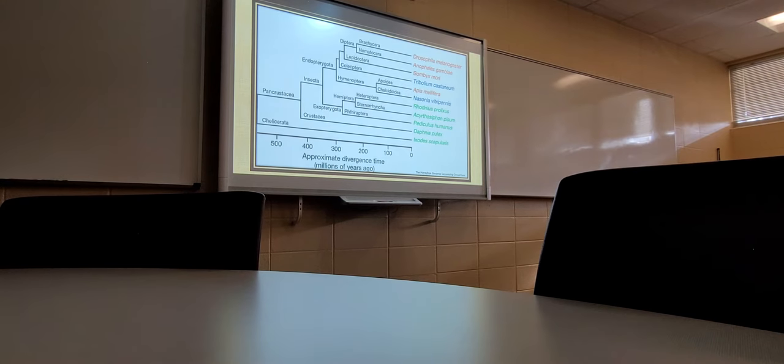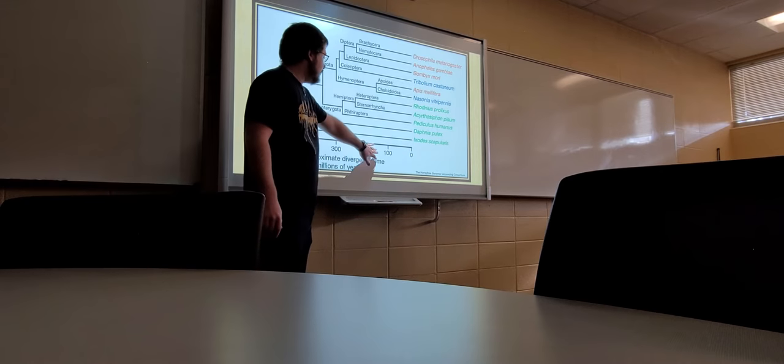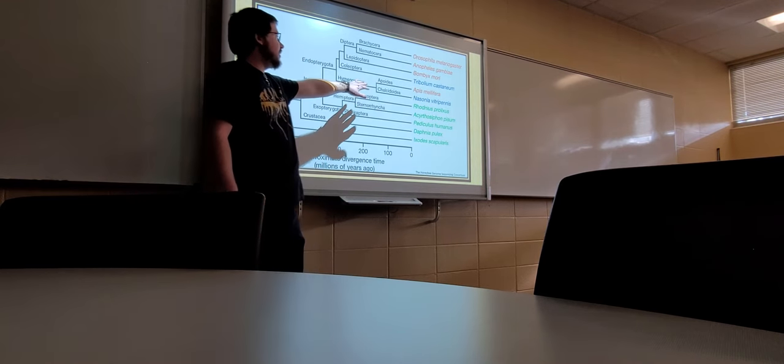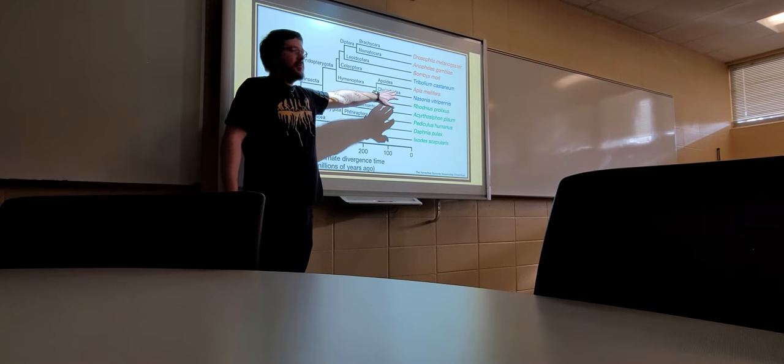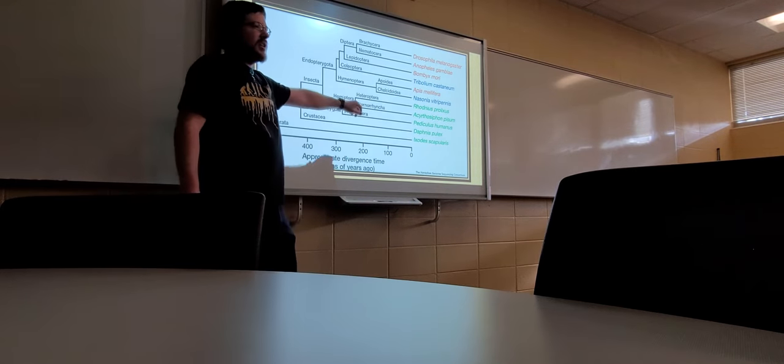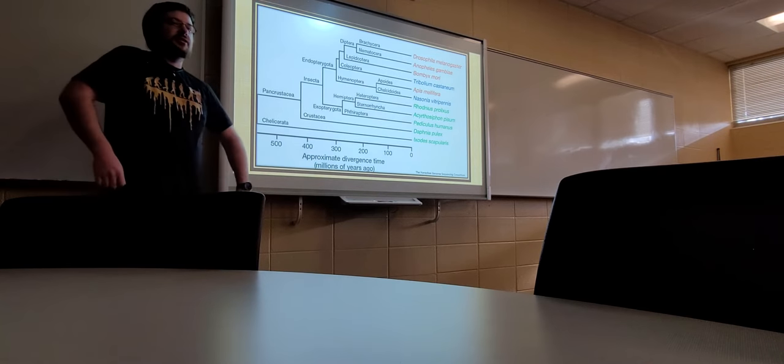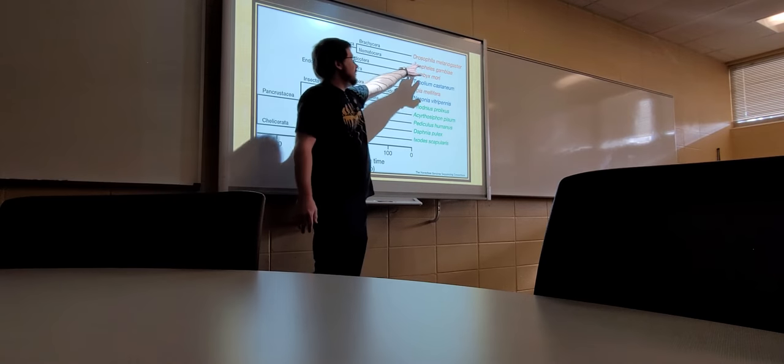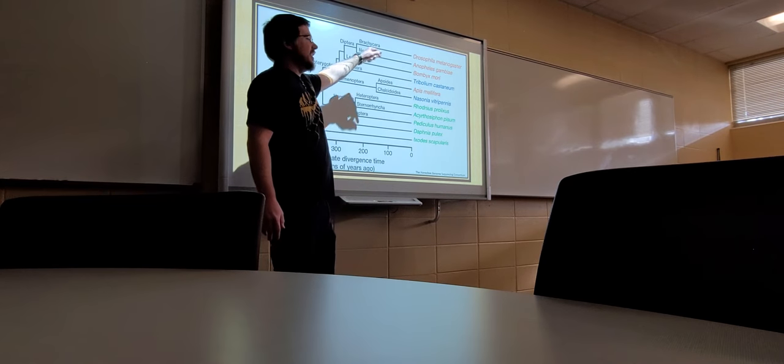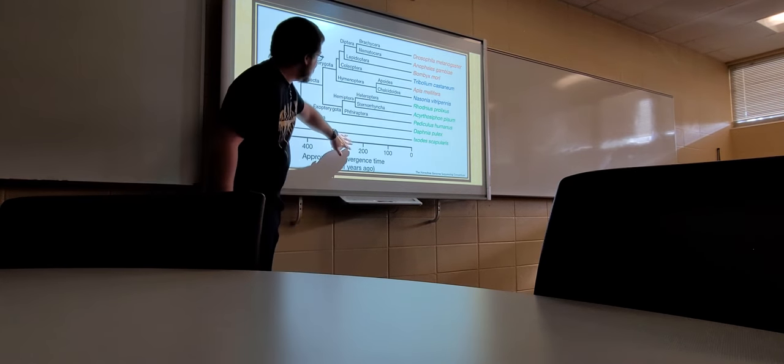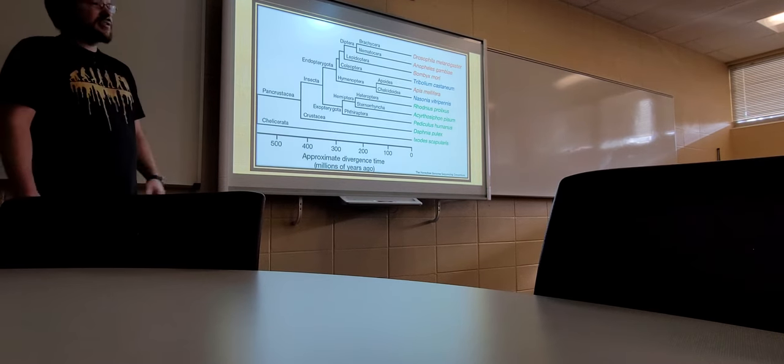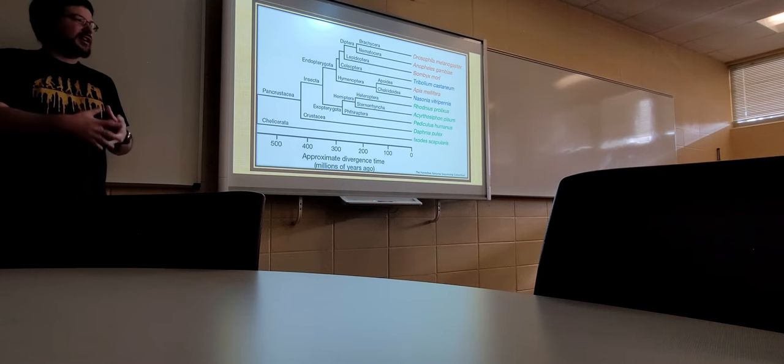This is just a lineage showing roughly how long Apis mellifera has been around. About 150 million years ago, off of Hymenoptera, you have Apoidea that showed up, which is the family that Apis mellifera belongs to. Everybody should recognize the fruit fly Drosophila melanogaster, which has been around for about 220 million years. So bees have been around for 150 million years. They kind of have everything down pat. They got it down to a science.